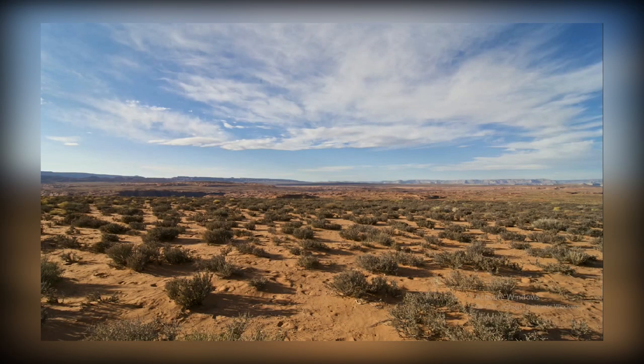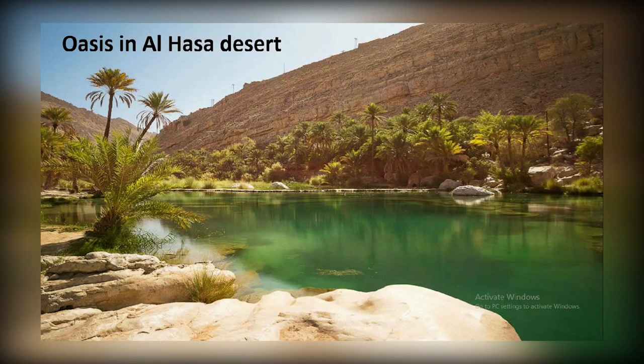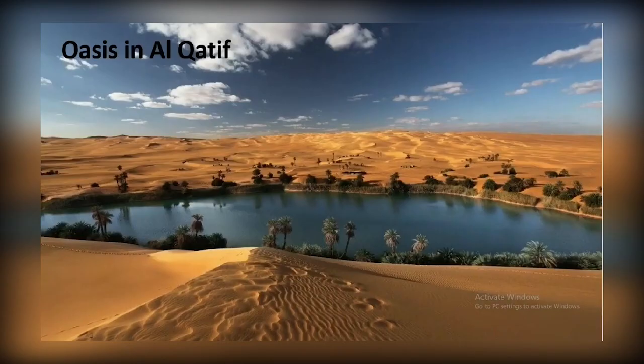But of course, there are some places in this desert where underground water comes to the surface of the land, and such a water area in a desert is called an oasis.